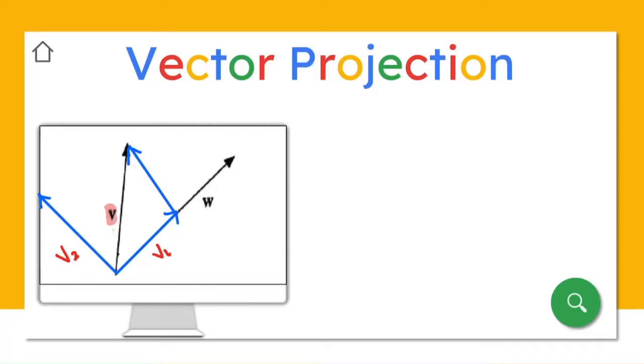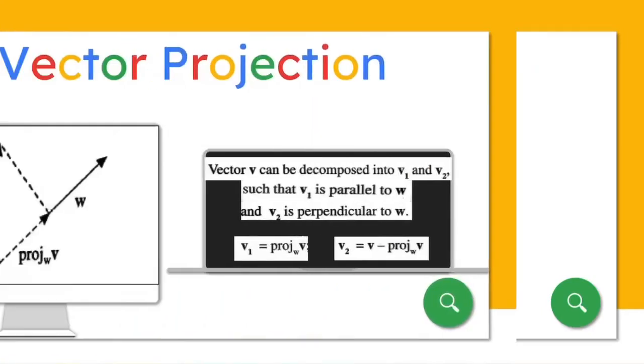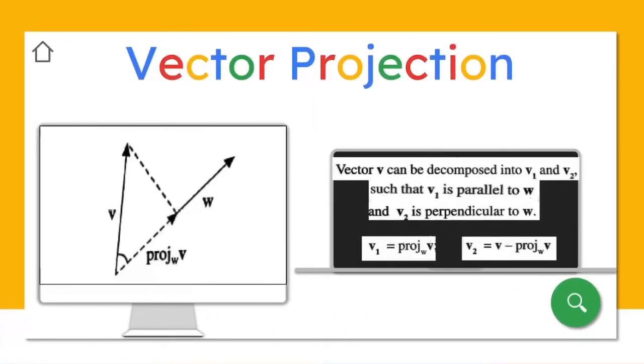So let's bring v2 here. We can see now that your v1 here is parallel to your w, while v2 here is perpendicular to your w.